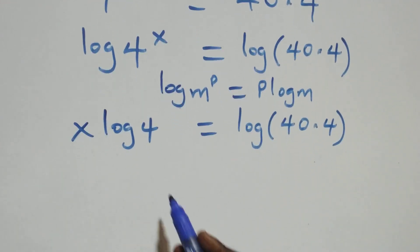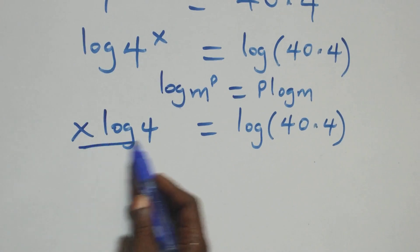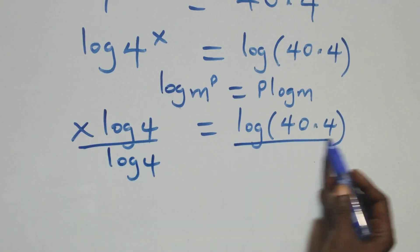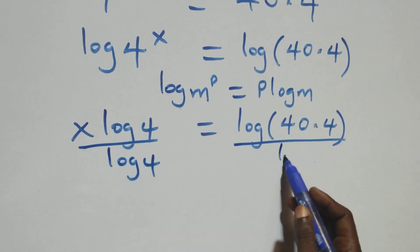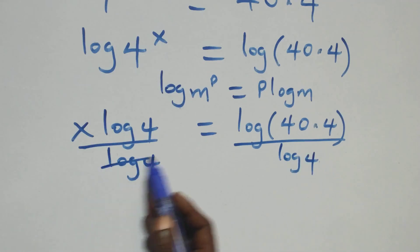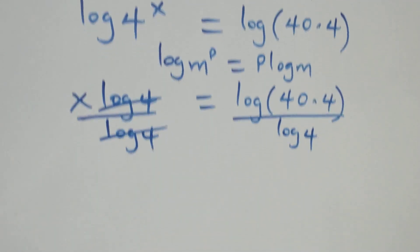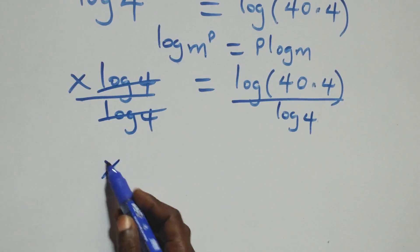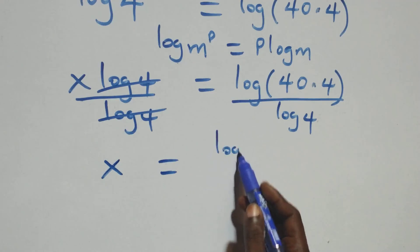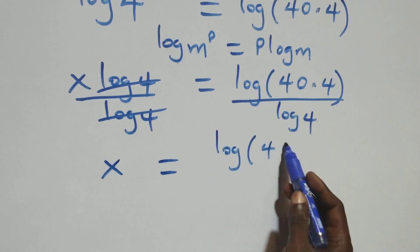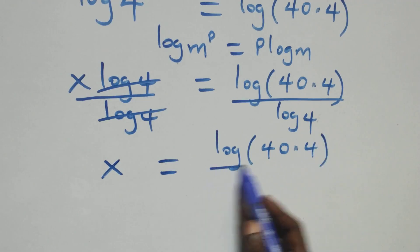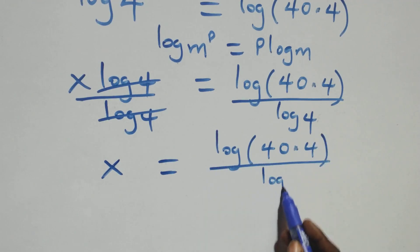The next step: we divide both sides by log 4. The log 4 terms cancel each other, and we have x equals log(40 × 4) over log 4.